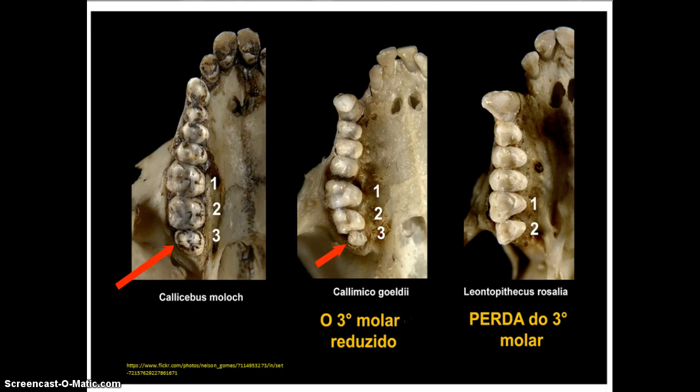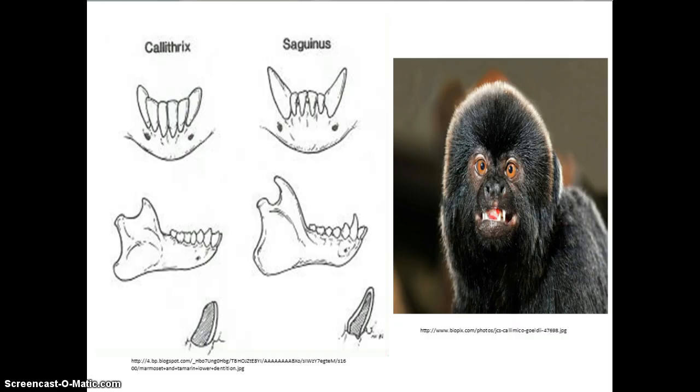One of the primary defining features in primate taxonomic separation is dentition. Humans and all other Catarrhines have a dental formula of 2-1-2-3. All of the Callitrichidae have a dental formula of 2-1-3-2, while the Cebidae have 2-1-3-3. The Calamico has a dental formula of 2-1-3-3, making it more similar to the Cebidae.